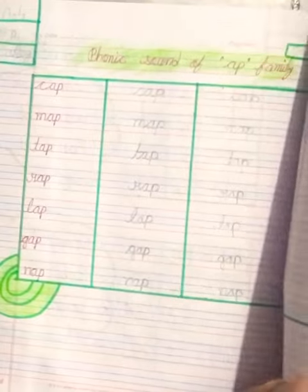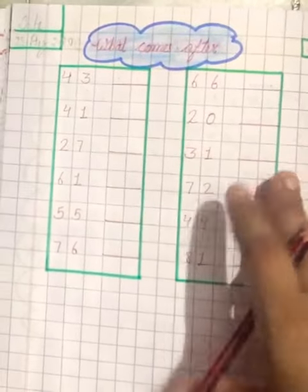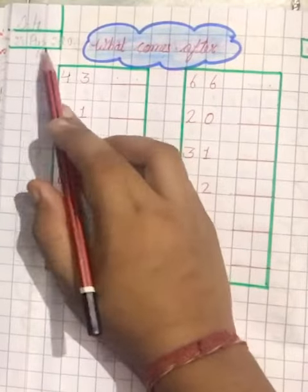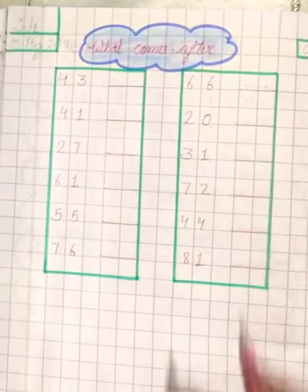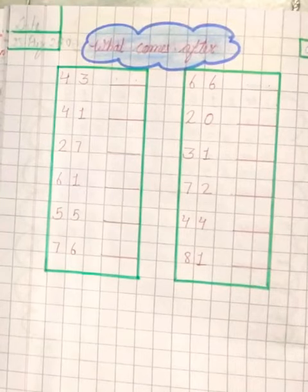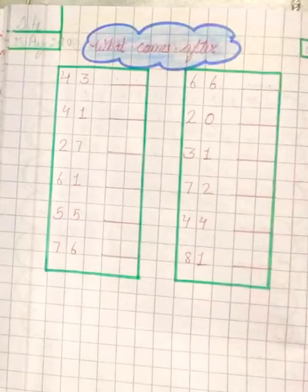Now take out your next notebook, open your math notebook and first of all write down date: 25 August 2020. And write down CW and today's topic is what comes after. So students, look at these numbers and what comes after.